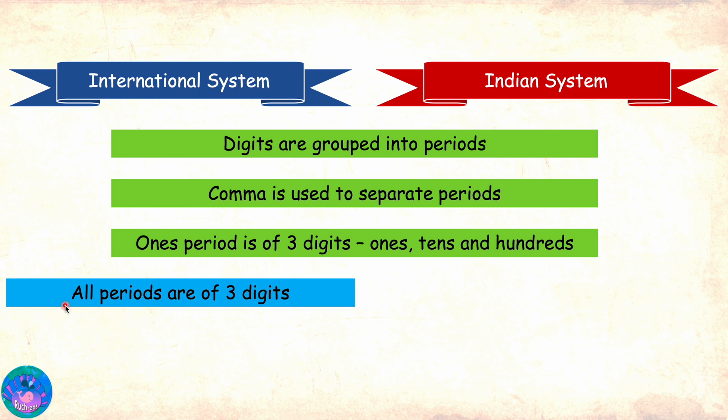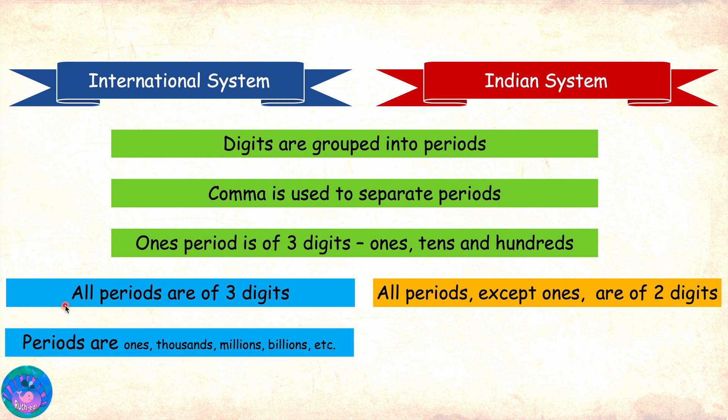In the international system, each period is of three digits. In the Indian system, the ones period is of three digits and all others are of two digits. In the international system, the period names are ones, thousands, millions, billions, etc. In the Indian system, the period names are ones, thousands, lakhs, crores, etc.